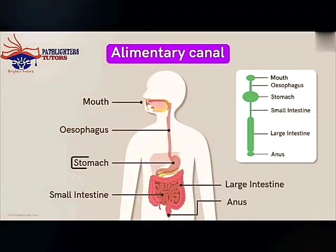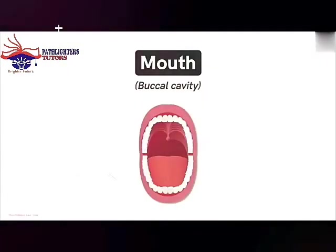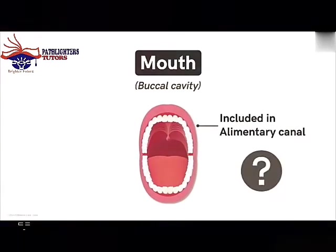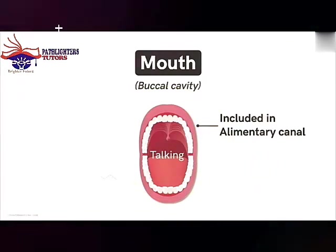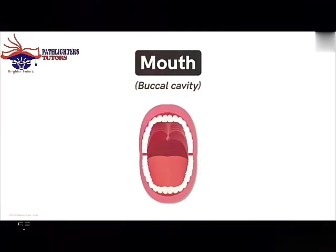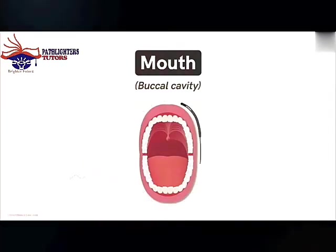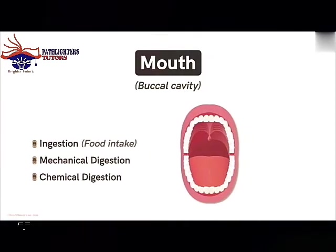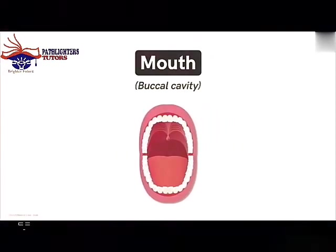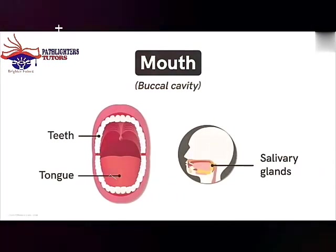Let's look at the first part — the mouth, also called the buccal cavity, which is included in the alimentary canal. Our mouth is directly involved in the process of digestion; it is in fact the commencing point for digestion. It is involved in ingestion of food, followed by mechanical digestion and chemical digestion. There are three major parts in the mouth which aid in digestion: the tongue, the teeth, and the salivary glands.